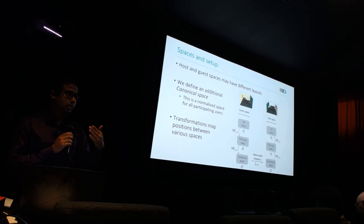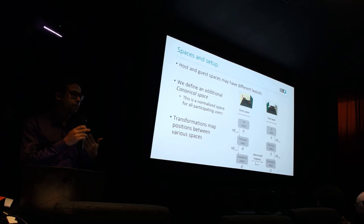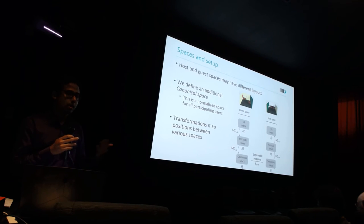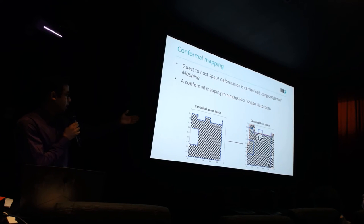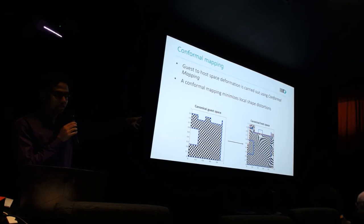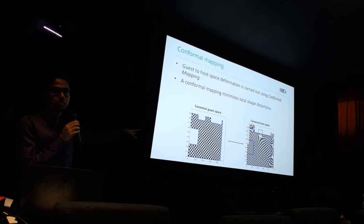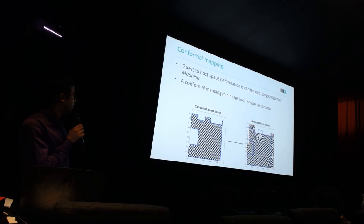We do this based on the higher dimension of the rooms. If the room size is 8 by 10 meters, then 10 becomes 1, so it becomes 1 by 0.8. We do this for both physical spaces. We then come up with a whole space where the virtual space is morphed into the guest space. There is a bit of deformation, which is unavoidable, but we try to minimize the deformation to avoid any kind of motion sickness or adverse effect.